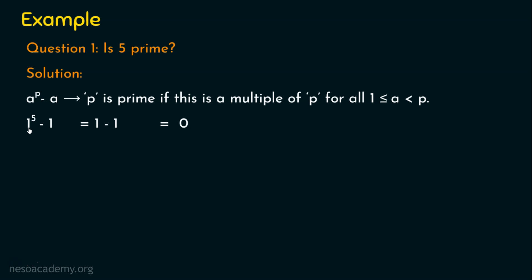Let's start with a = 1. For a = 1: 1^5 − 1 = 1 − 1 = 0. Is 0 a multiple of 5? Yes — 0 is a multiple of any number, so obviously 0 is a multiple of 5 as well. For a = 1, a^p − a gives a result which is a multiple of 5.